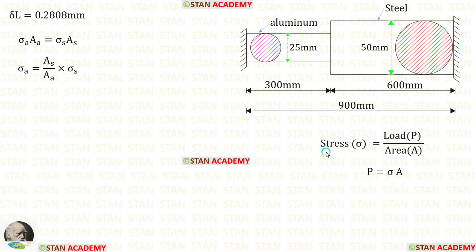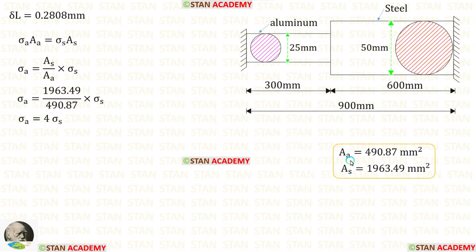We know that the stress sigma is equal to load P upon area A. So the load P is equal to sigma into A. The load P will be same in both of the materials. So we can write sigma_A times A_A is equal to sigma_S times A_S. Then we can take A_A on the right side. It will come in the denominator. Let us apply the values of areas. Finally we are getting sigma_A is equal to 4 sigma_S.